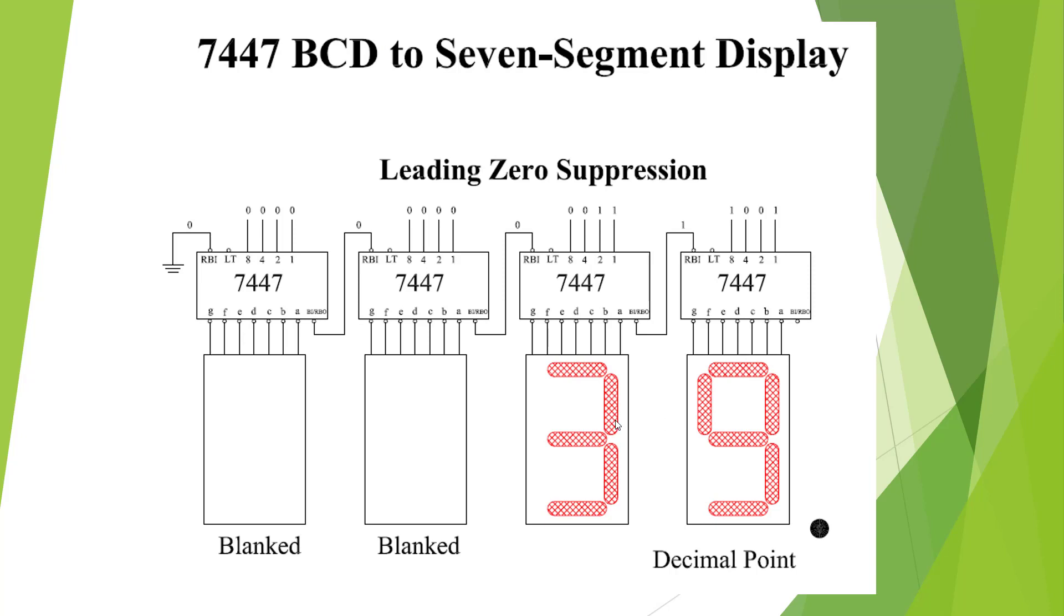This is showing leading 0 suppression function. So if we put the RBI low and the first digit is a 0 and we don't want it to display, it will not display. It'll be blanked. Since this one's 0 and RBI is low, we're going to send a low signal to the next device. It will no longer display a 0. And now we have a clean display. Instead of 0039, we're going to get a blank, blank 39.